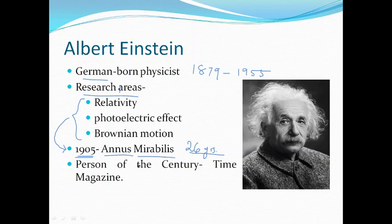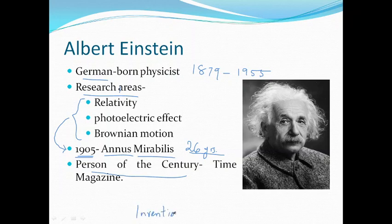He is considered one of the greatest physicists and scientists of all time, and he was chosen as the person of the 20th century by Time magazine. Unlike Thomas Alva Edison or Nikola Tesla, who made plenty of inventions, the contribution by Albert Einstein is mainly in the theoretical field, relating to concepts and ideas.